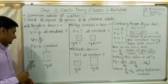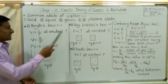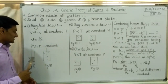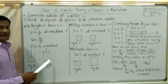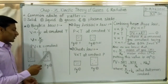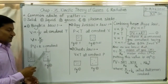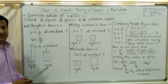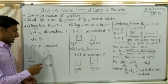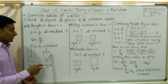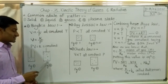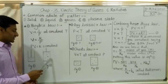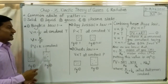Now, to maintain the temperature of this container constant, we slowly increase the volume. As we slowly increase the volume, the gas molecules inside get a larger space, and therefore the rate of collision of the gas molecules with each other as well as with the wall of the container decreases, and therefore the pressure on the wall decreases.